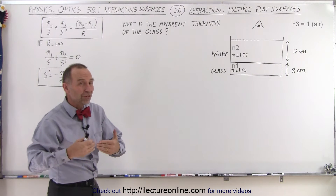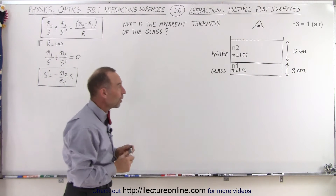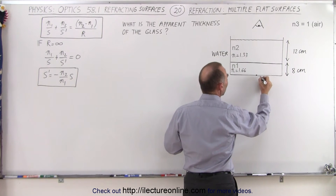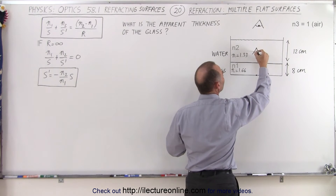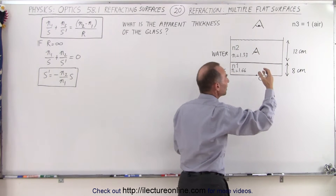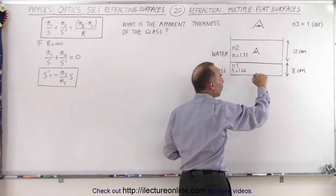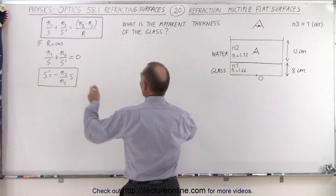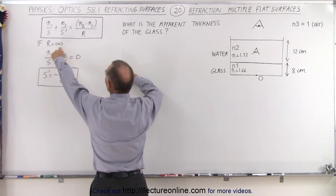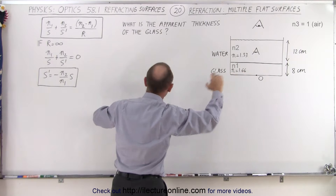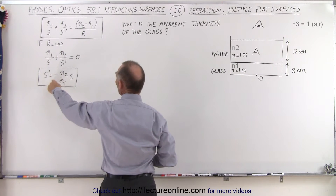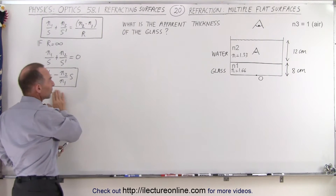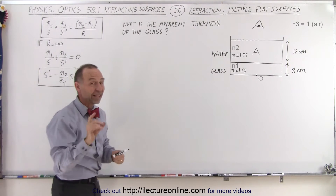To do that, we need to work through this in several steps. We're going to use the refraction equation for flat surfaces. Since R is going to be infinity because these are all flat surfaces, the equation reduces to S' = -(N2/N1) × S. We're going to use this equation three times to figure out the apparent thickness of the glass.